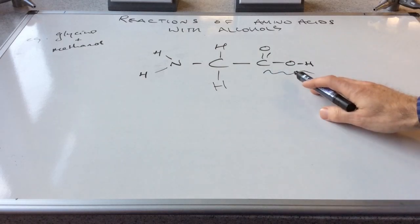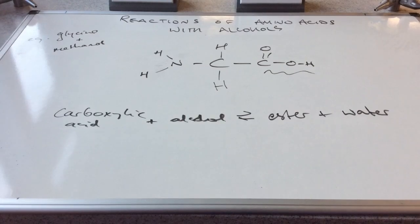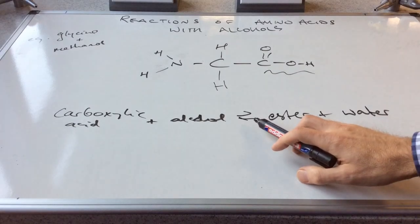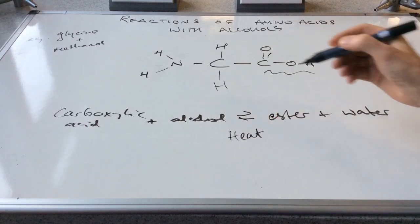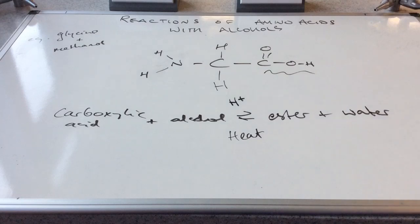So if you remember, carboxylic acids can react with alcohols to form an ester and water. So there's the word equation written up. Carboxylic acid plus alcohol makes ester and water. Just a reminder, this is a reversible reaction. It needs heat. And you also need a strong acid catalyst. So I would normally say concentrated sulfuric acid as a catalyst.